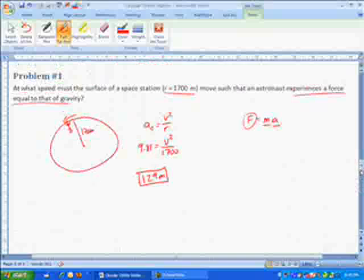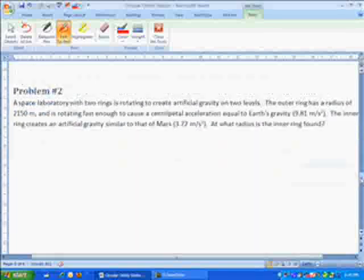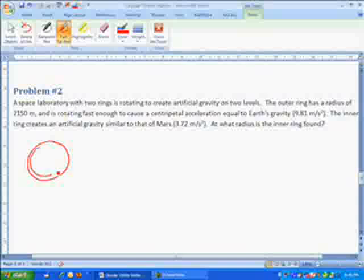The second problem dealing with artificial gravity is this one. We've got a space lab with two rings. So basically we've got an outer ring, and then we've got a couple of arms coming in, and then we've got an inner ring. And the idea is on the outer ring, we want the acceleration to be the same as gravity, 9.81.